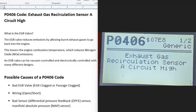Today I'm talking about a P0406 code, what it is and how to fix it. A P0406 code is an Exhaust Gas Recirculation Sensor A Circuit High.